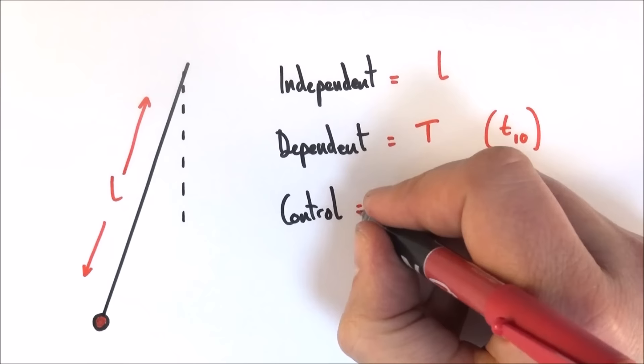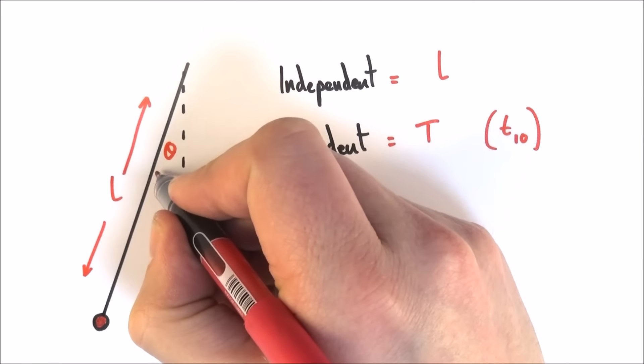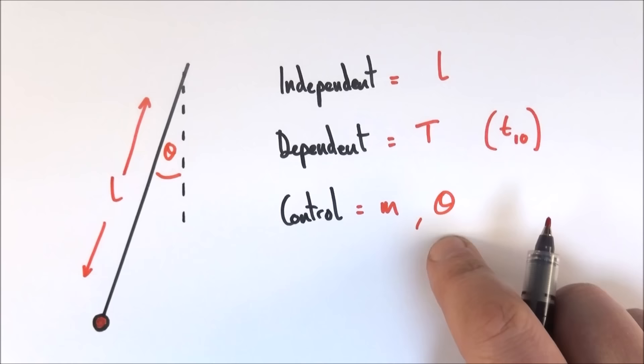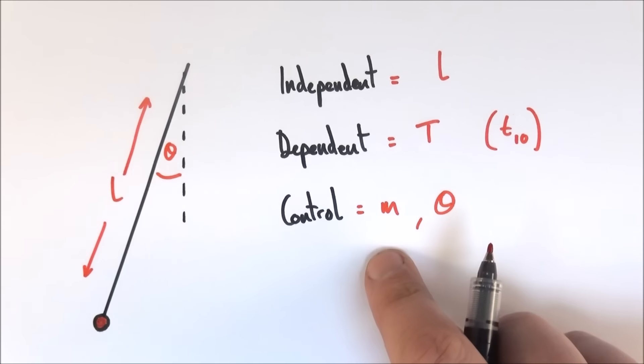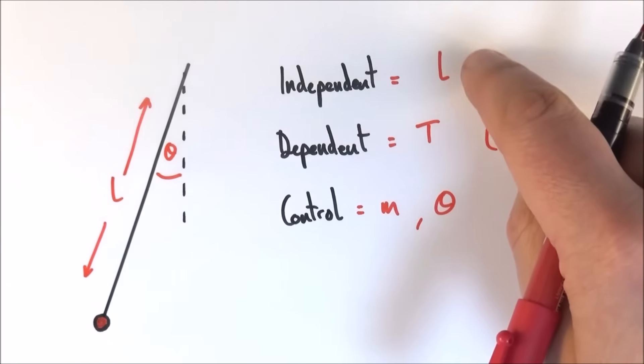So what things do I keep the same? Well, I might keep the same mass on the end of the bob to make sure it's a fair test, and also maybe release it from the same angle theta each time. And by doing that, I'm sure that the thing that changes the time period isn't the mass on the end, it isn't the angle that it's swinging through, but it's purely the length.